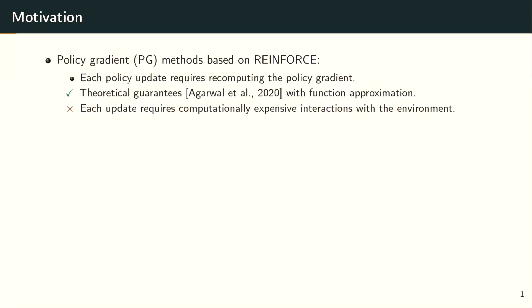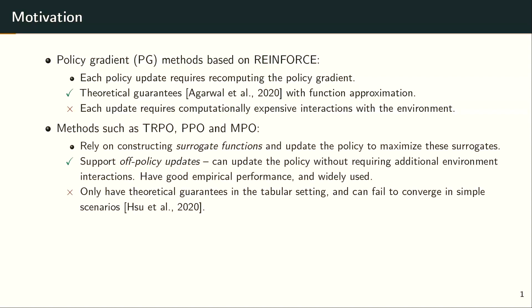The motivation for this work started with the observation that policy gradient based on REINFORCE updates requires recomputing the policy gradient each iteration — you interact with the simulator, compute the policy gradient involving Q functions or advantages, then update the policy. This has theoretical guarantees even with function approximation, but because each update requires computationally expensive environment interaction, it is not very practical. In practice, people use methods such as TRPO, CPO, and MPO, which rely on constructing surrogate functions and support off-policy updates — updating policy parameters without requiring additional environment interaction.